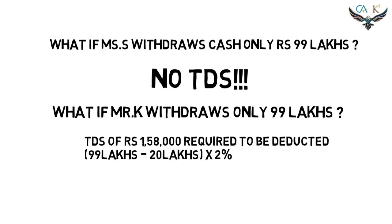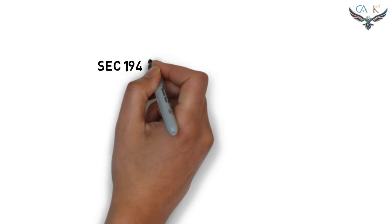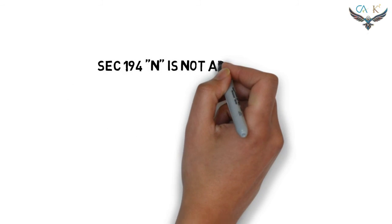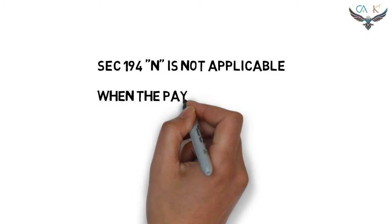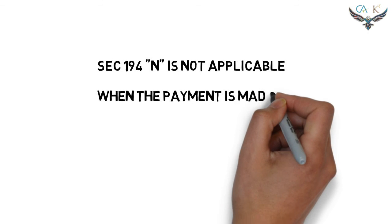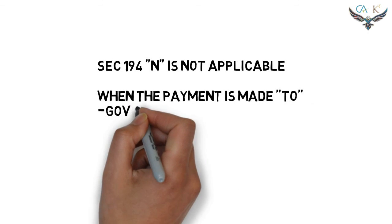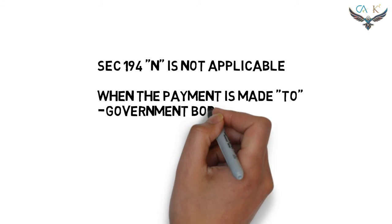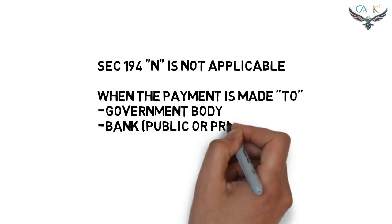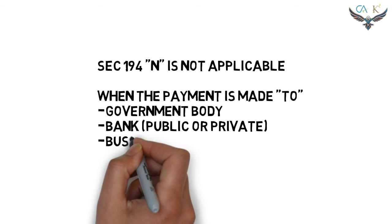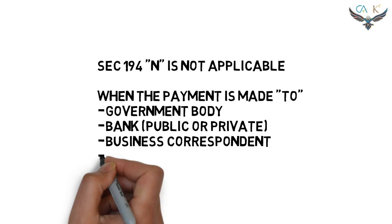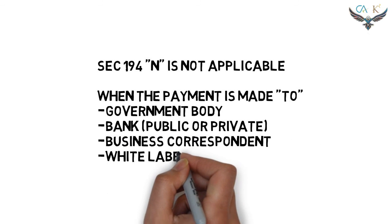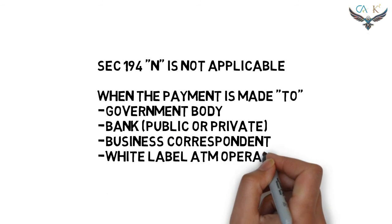Now let's look at the non-applicabilities. TDS under Section 194N is not applicable when the payment is made to the government body, banks — whether public or private — business correspondents, and white label ATM operators.